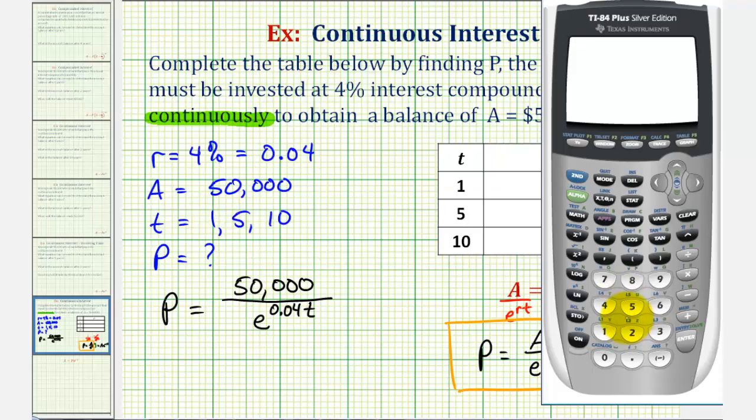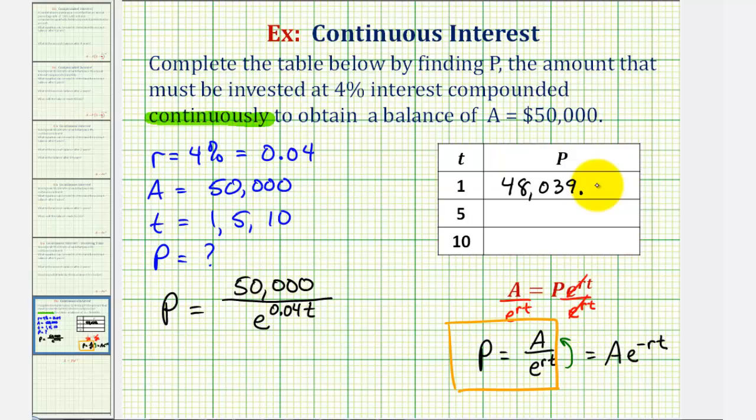So first, T is equal to one, so we'll have 50,000 divided by E raised to the power of 0.04 times one. Of course, the times one is optional. Enter. So when T equals one, P is equal to $48,039.47. Which means, we'd have to invest this amount today in this account that pays 4% continuous interest, if they wanted $50,000 after one year.